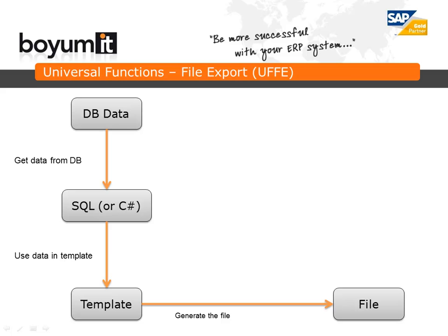The flow of UFE is that you start out by defining what data you want to pull from SAP. This can be done using SQL or C-sharp, and you then define a template on how the file should look. This could be an XML format, a separator-delimited format like EDI/FACT, or something entirely different. UFE can then take the data and merge it with the template using keywords and a for-each syntax, and output a file to a specified location.